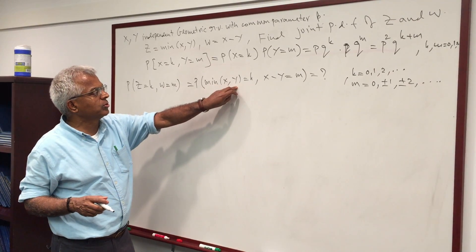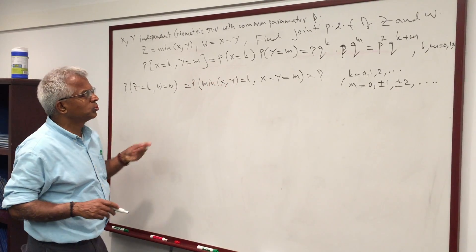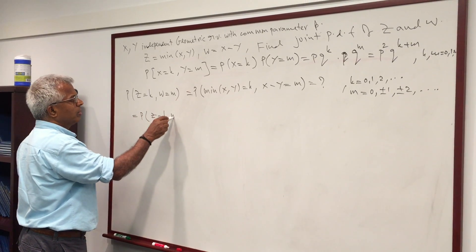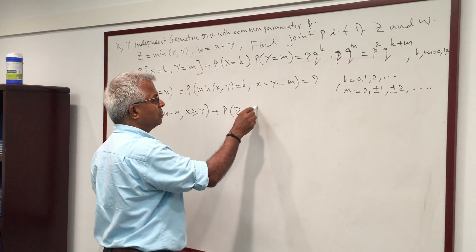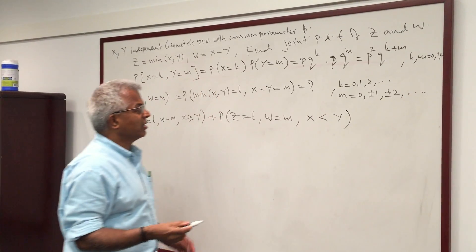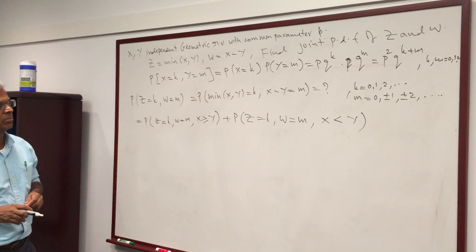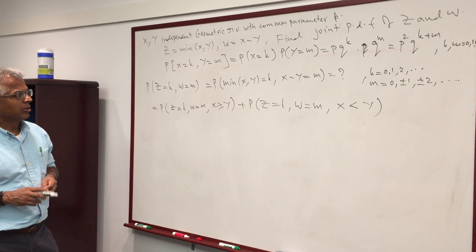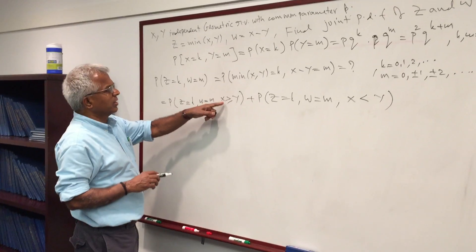Because if X is greater than or equal to Y, the minimum is just Y, and if X is less than Y, the minimum is X. So we are going to write P(Z=K, W=M) as P(Z=K, W=M, X≥Y) plus P(Z=K, W=M, X<Y). Notice I haven't done anything — I've just broken the region into two mutually non-overlapping regions whose union is the whole space.